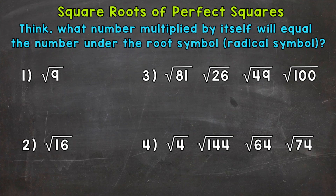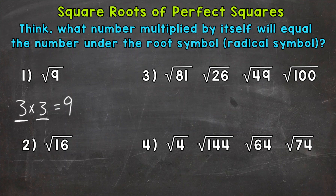Let's start with number 1, where we have the square root of 9. We need to think about what number multiplied by itself will equal 9. We know that 3 times 3 equals 9 — a number multiplied by itself gives us the number under the square root symbol. So the square root of 9 equals 3, and that's our answer.